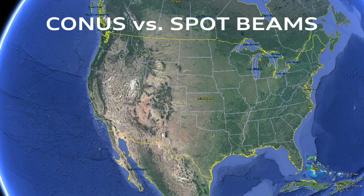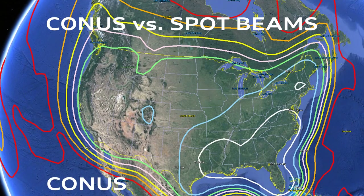Most DirecTV and DISH programming is broadcast all over the continental United States — we use the term CONUS, which just means continental United States. This is DirecTV's satellite coverage map. Everything inside the yellow line is where you'd get relatively good service. Unfortunately, it goes pretty far into southern Canada, northern Mexico, and the Caribbean. However, it is illegal to send DirecTV or DISH equipment across the border — it's against Canadian law, US law, Mexican law, and the laws of all the countries in the Caribbean.